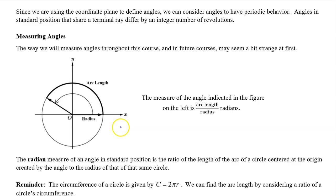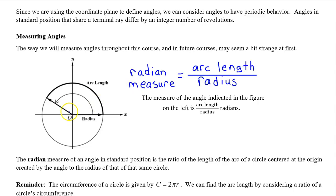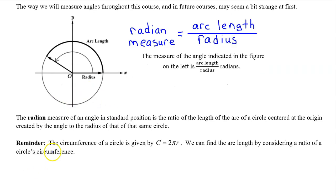The way we measure angles in higher level math may seem a little strange at first, but you get used to it. Another thing that is strange is that we are not going to use degrees like you learned in geometry. The radian measure of an angle is equal to the arc length divided by the radius. Remember that the circumference of a circle is given by c equals 2πr. We can find the arc length by considering a ratio of the circle's circumference.